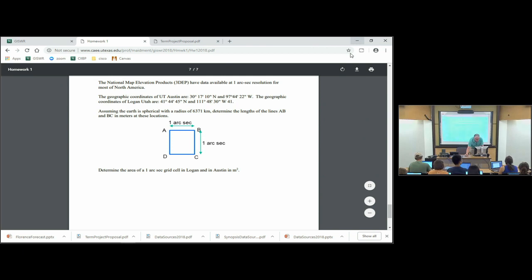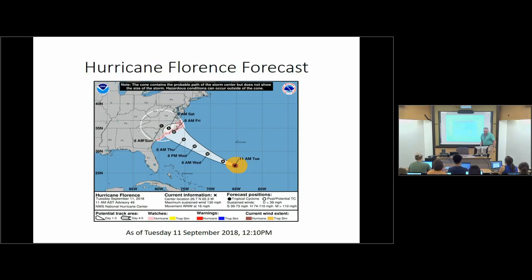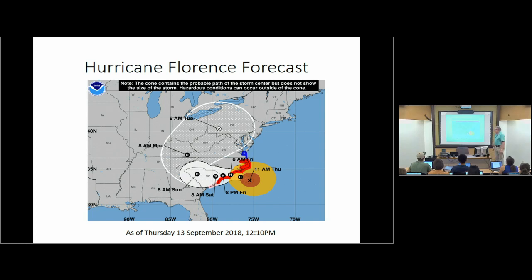A topical question right now is Hurricane Florence. This is the forecast as it existed when we had class on Tuesday — at that time it was projected to hit the coast of North Carolina and go into Virginia. Yesterday at 11 o'clock Wednesday, the forecast had shifted south, and there's the perception the hurricane is going to go along the coast, which is not good because that means it can sweep water inland and produce more flooding. This morning the projection shows a little more inland, which is good — you want to get hurricanes off the ocean as quickly as possible.